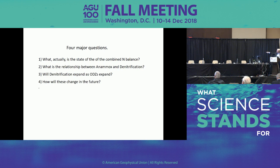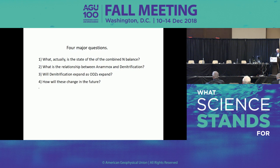There are four major unsolved questions about the nitrogen cycle: first, is the budget balanced? Second, what is the relative importance of anammox versus canonical denitrification? Third, if oxygen minimum zones are expanding, is denitrification expanding with them? And fourth, how are these things going to change in the future? We still have those big questions to look at.